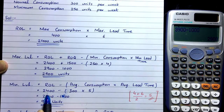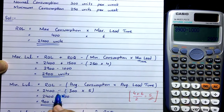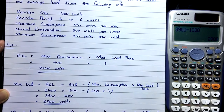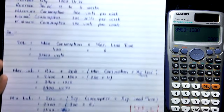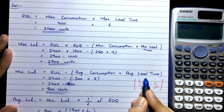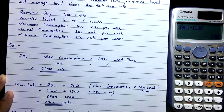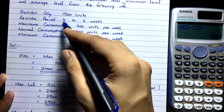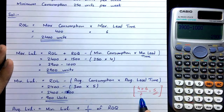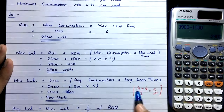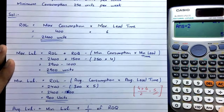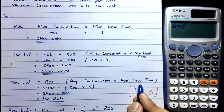Reorder level = 2,400 units. Average consumption equals normal consumption = 300 units per week. Average lead time is not directly given, so we calculate it as (Minimum Lead Time + Maximum Lead Time) ÷ 2 = (4 + 6) ÷ 2 = 5 weeks.